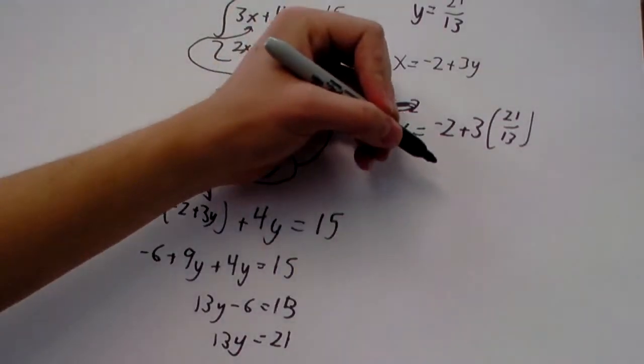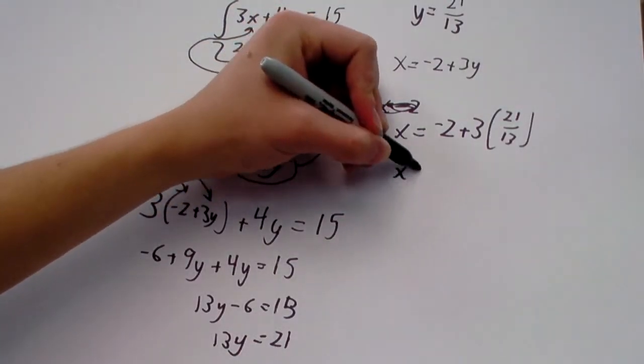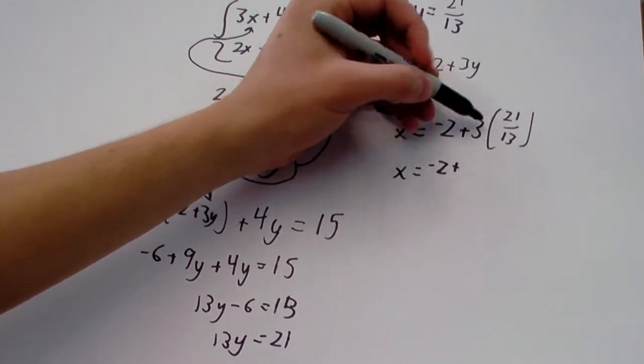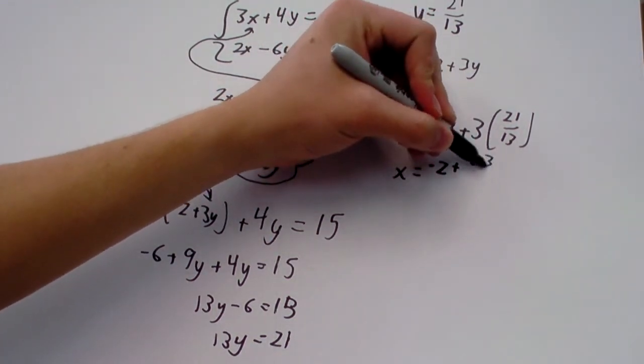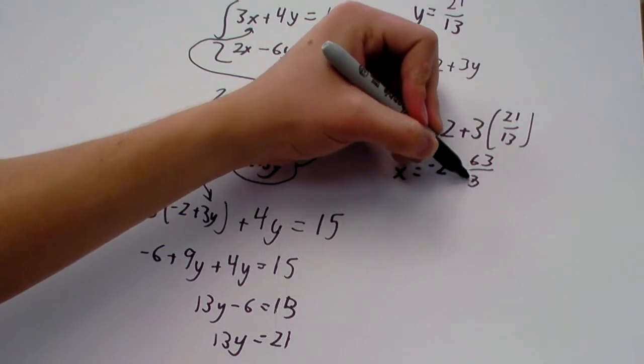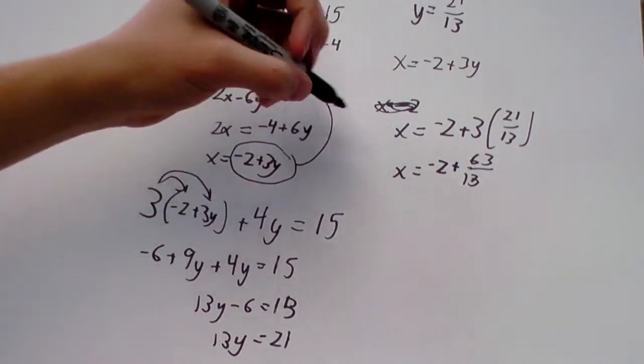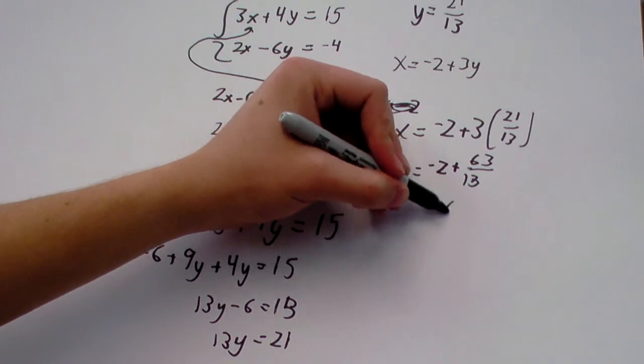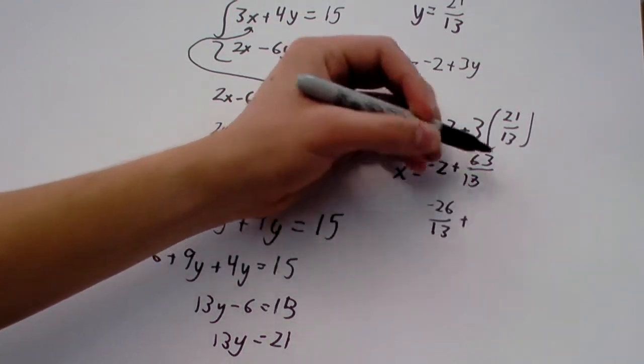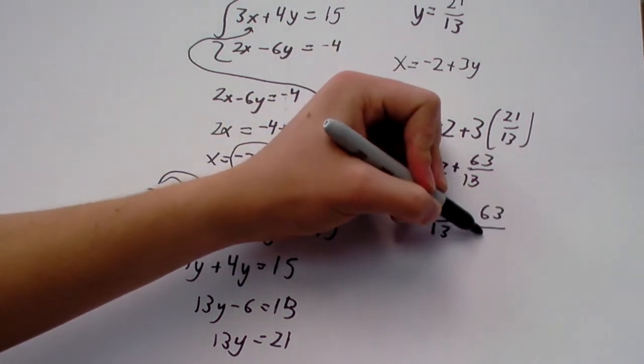So, x is negative 2 plus 3 times 21 is 63 over 13. And negative 2, of course, can be rewritten as negative 26 over 13 plus 63 over 13.